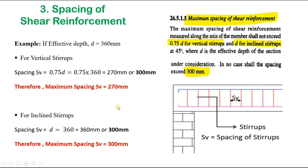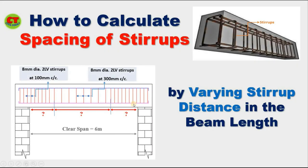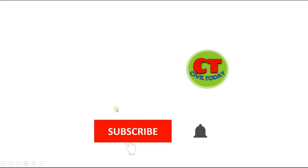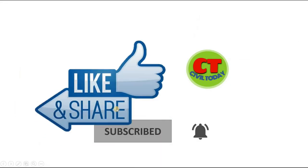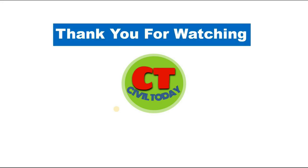This is how the maximum spacing and minimum spacing of shear reinforcement are calculated. In the next video we will see how to calculate the spacing of stirrups by varying stirrup distance along the beam length. Please subscribe to Civil Today and like and share the video. Thank you for watching.